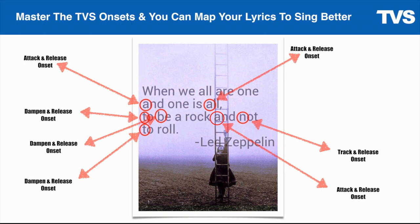I often tell my students that the onsets are sort of like the Rosetta Stone of singing. It's the code — the code is inside these onsets and understanding these phonetics. And it's not complicated in the program; it's super basic. You're just going to learn eight onsets and practice them.